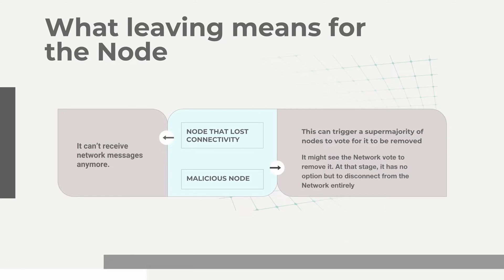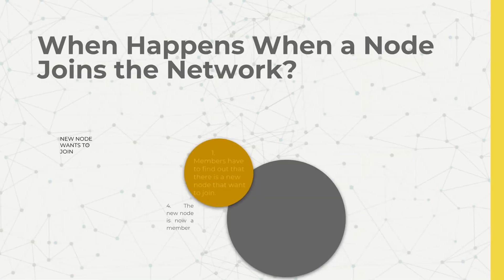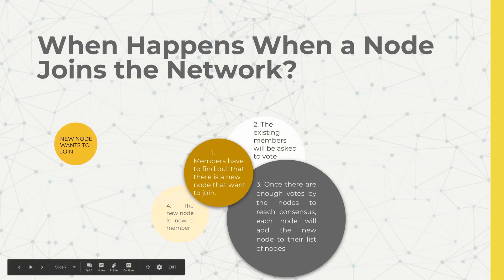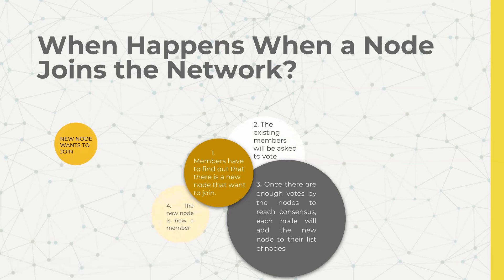Now, when a node joins, things are a little more complicated. First up, the members have to find out that there's a new node that actually wants to join. And once a node following the Parsec protocol finds out that there's a new node waiting to join, they're required to vote in order to add the node. And once there are enough votes by the nodes and consensus is eventually reached, then each node will add that new node to its peer list. The new node is now a member of the network, and it can be contacted by the other nodes, and others can accept the messages that it sends.